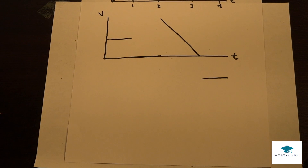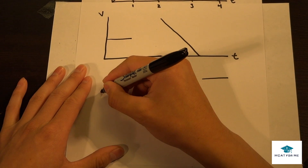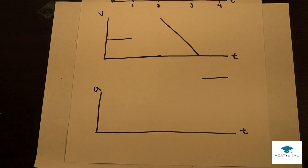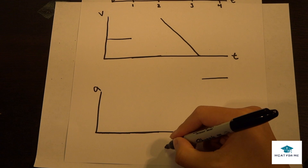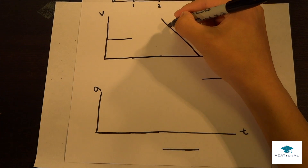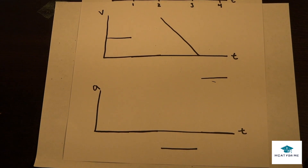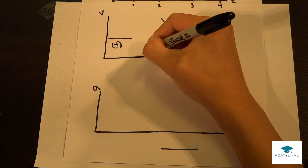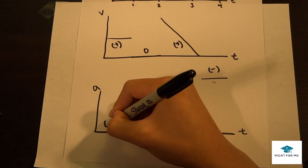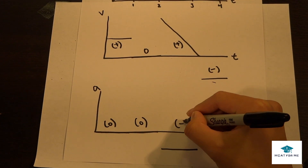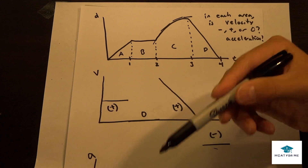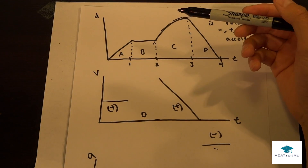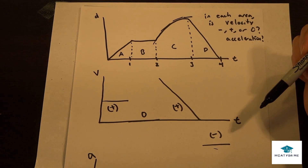Now we get acceleration from the velocity-time graph using the same approach — finding slopes. Segment A is a flat positive line, so acceleration is zero. Segment B is flat at zero, so acceleration is also zero. Segment C has a negative slope going down, so acceleration is negative. Segment D is a flat negative line, so its acceleration is zero. In summary: velocity is positive, zero, positive, negative; acceleration is zero, zero, negative, zero. Going straight from distance-time to acceleration is difficult, so it helps to go through the velocity-time graph as an intermediate step.